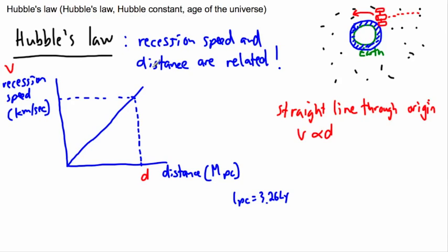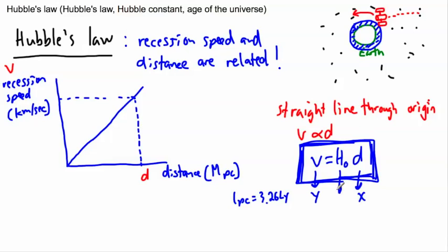In fact, we can write down something for it. We can go even further. We can say V then equals some number, some sort of slope here, times D. In fact, we're going to call it H₀. This is the sort of equation we use here for this. So this is like your, that's like your Y. This here is like your X. This here is your gradient.